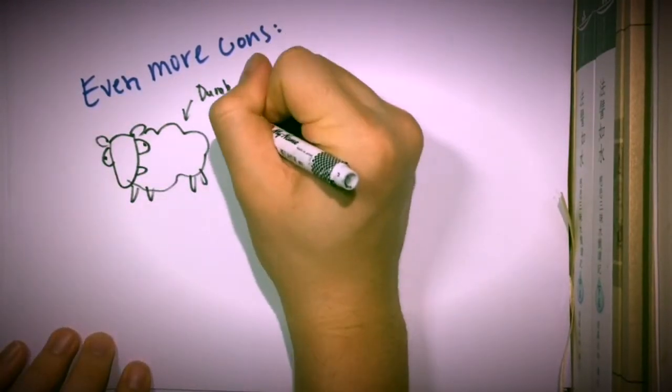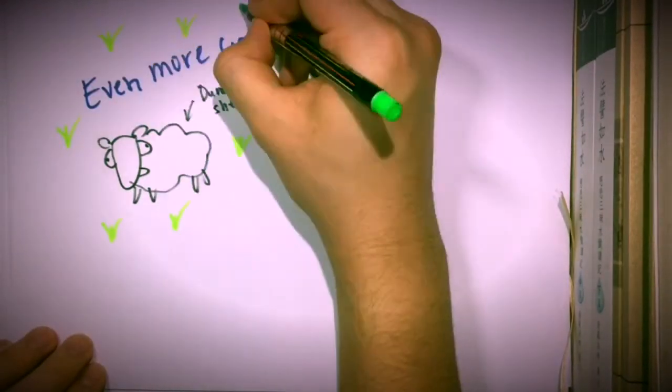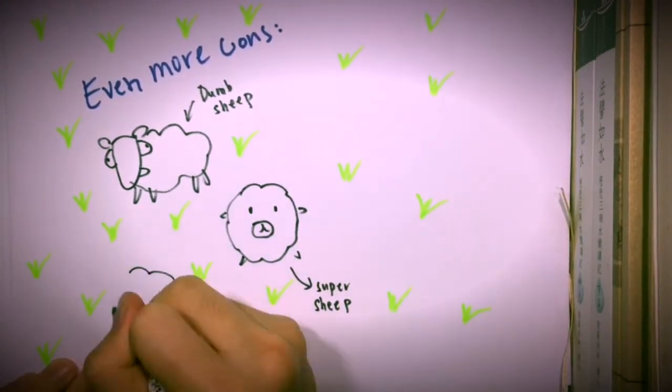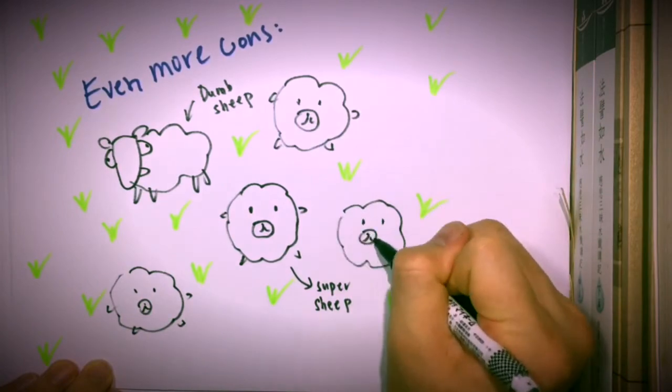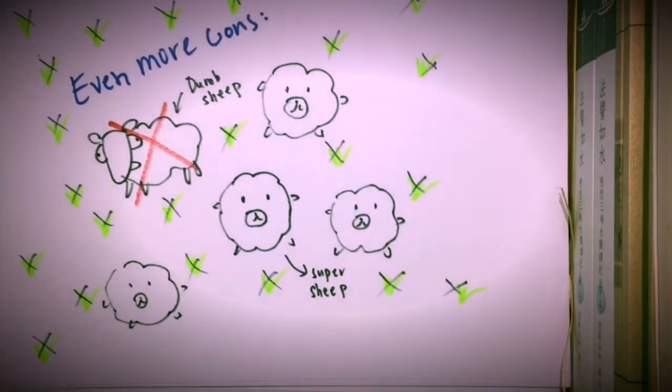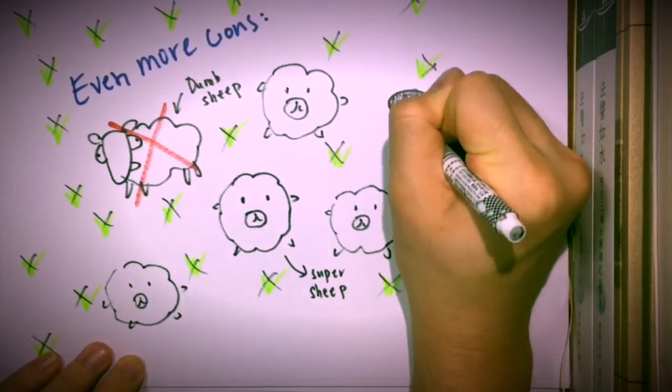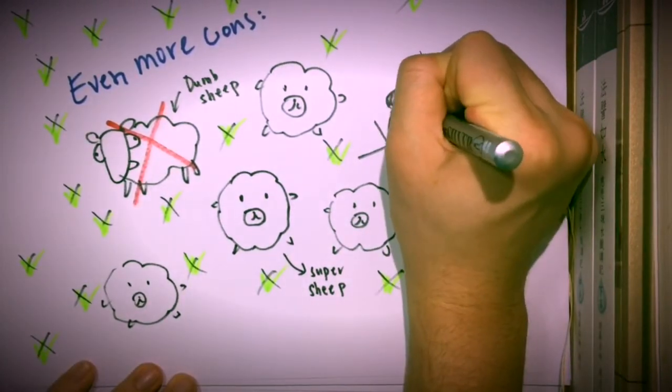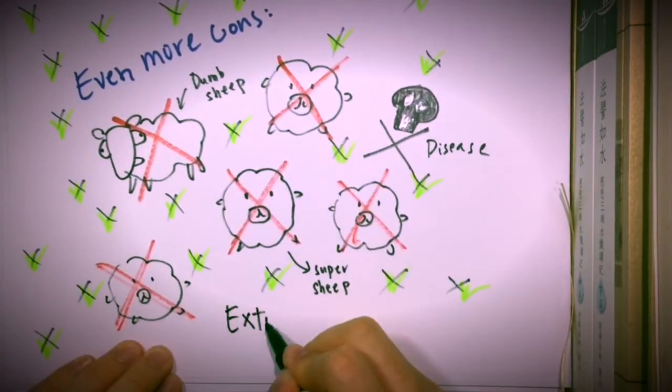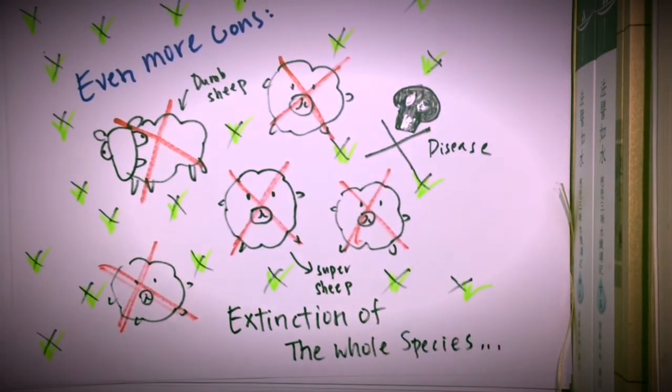And now, we have even more problems. If there is a dumb sheep in this ecosystem, and we start cloning a super sheep, this super sheep continues to clone and reproduce. It will eat all the grass and outcompete the dumb sheep. And if a disease came and killed all the super sheep, then the whole species will be wiped out.